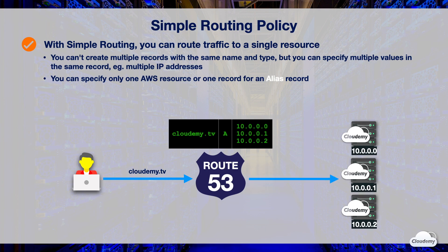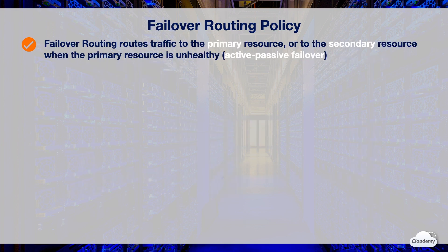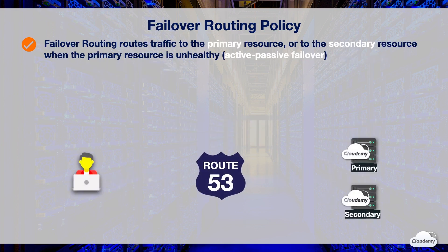The resolver returns the values to the client's web browser. The web browser then chooses a value and sends the request. Failover routing routes traffic to the primary resource when the resource is healthy, and routes to the secondary resource when the primary resource is unhealthy.